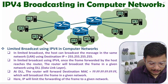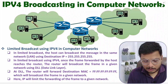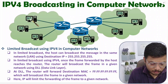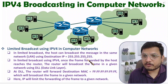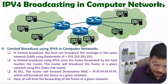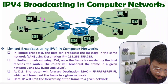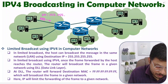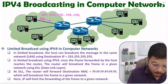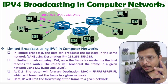For limited broadcast, let us consider host one wants to do broadcast in this given network. What host one will do is use destination IP as 255.255.255.255. So in the given frame, as host one forwards the frame with destination address 255.255.255.255, this frame will get broadcasted by router one in this network.